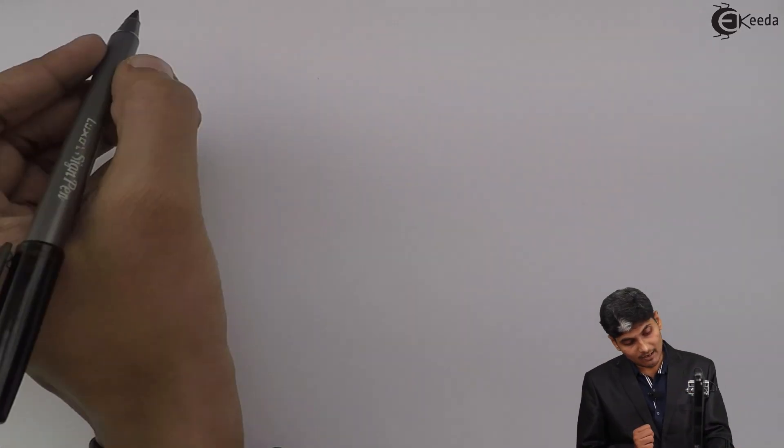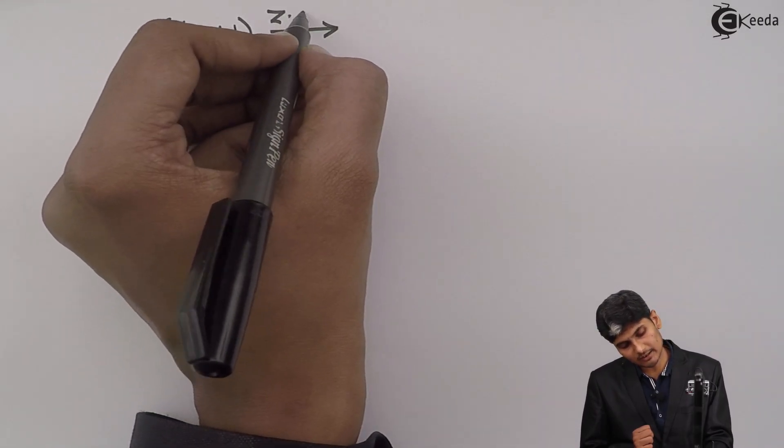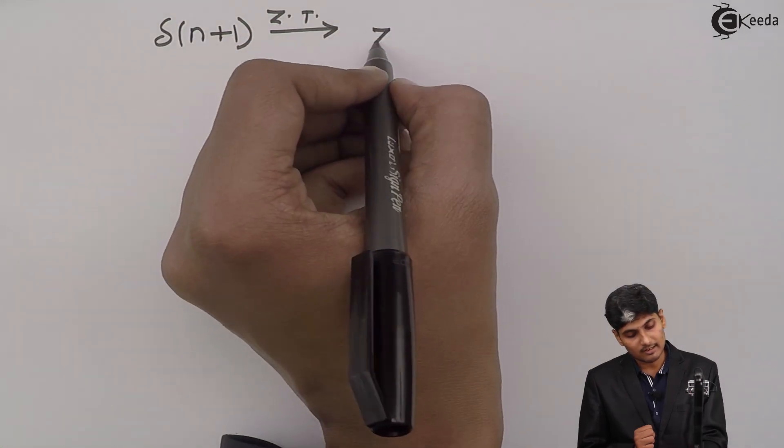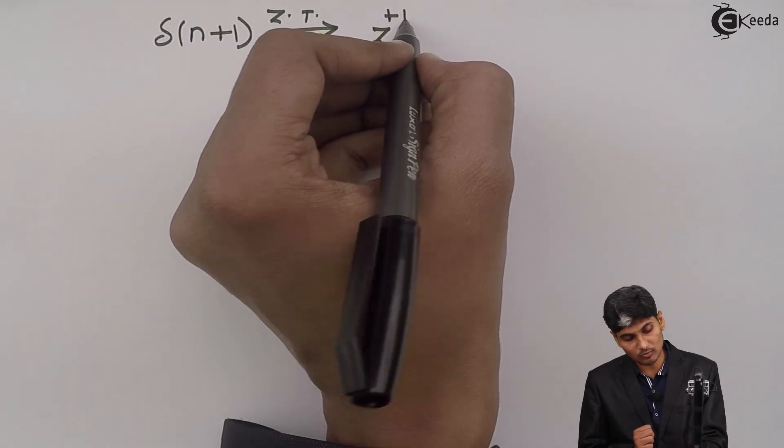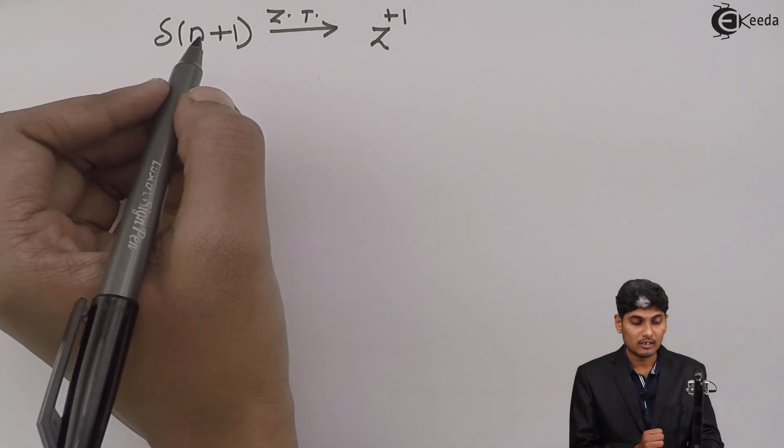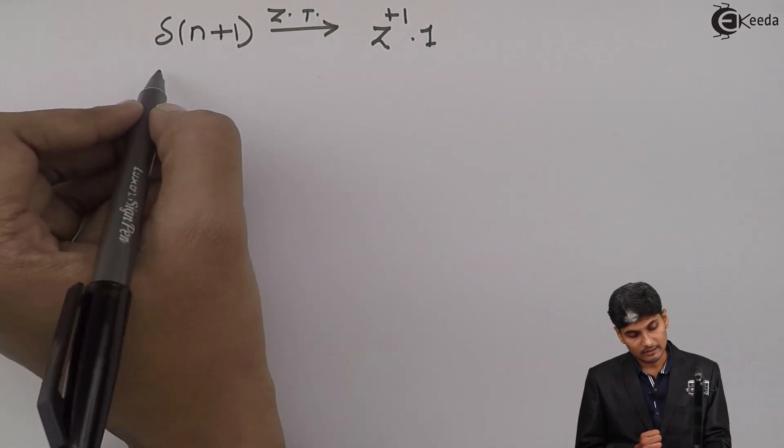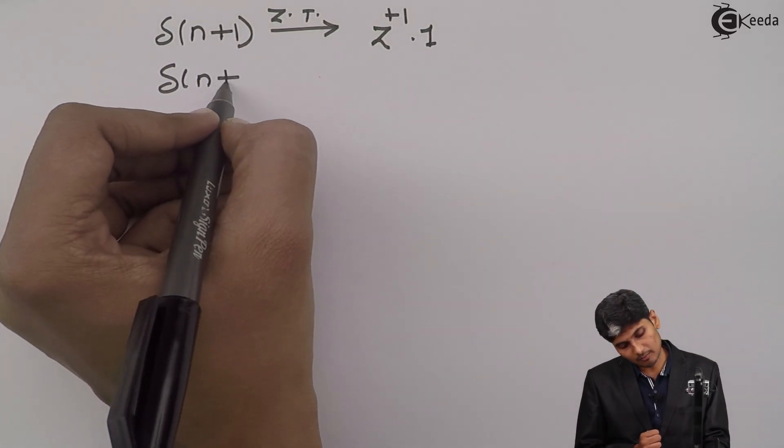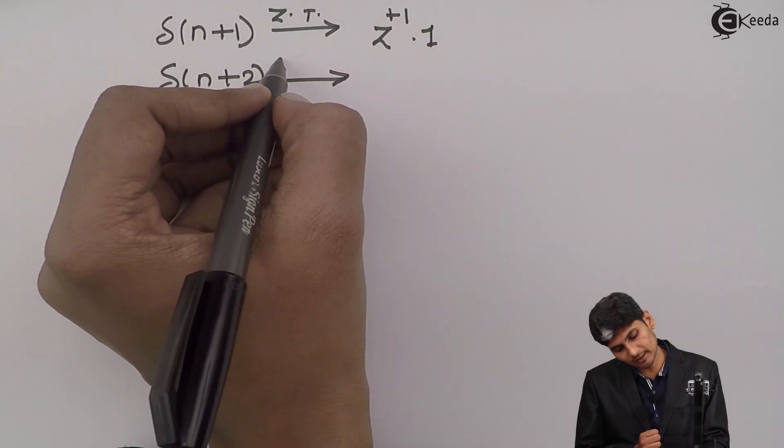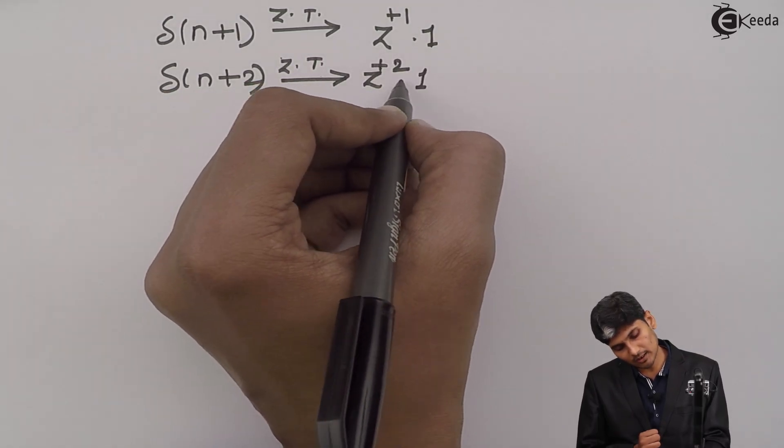If I have delta(n+1), then its Z transform will be z^(+1). If it's minus here, minus here; if it's plus here, plus here. Delta(n+2), its Z transform is z^(+2).